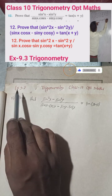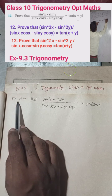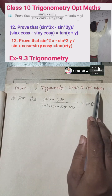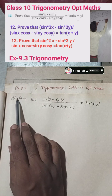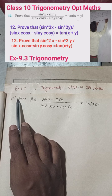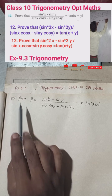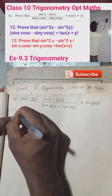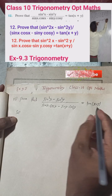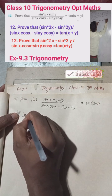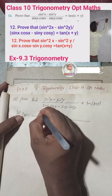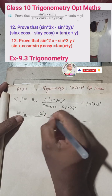Hi everybody, welcome back to Beamer Sarji's YouTube channel. This is question 12 of exercise 9.3, trigonometry, from optional maths. Question 15a, 15b, question 14, and question 13 have already been uploaded — you can check the playlist. Now the solution: prove that LHS is equal to RHS.